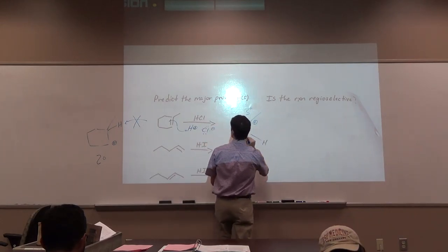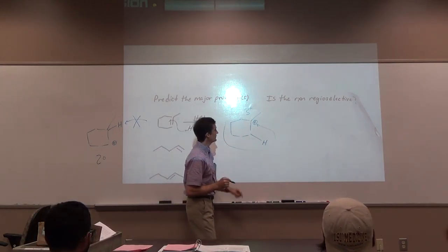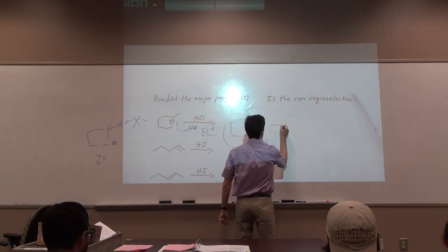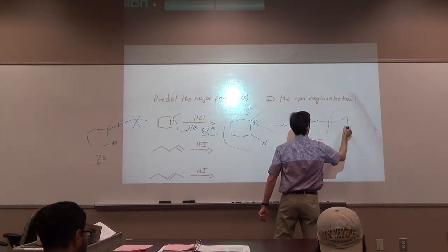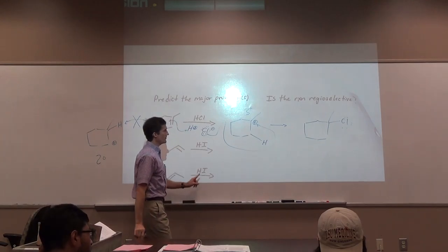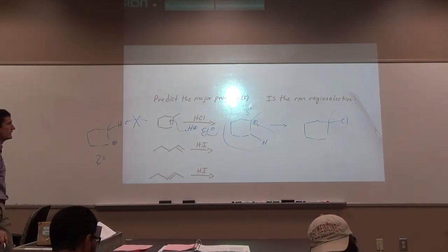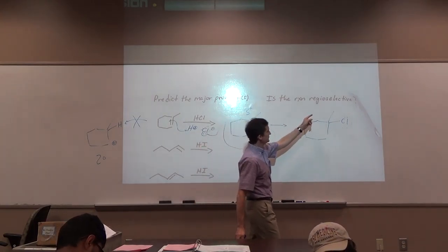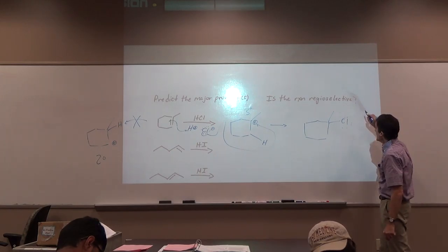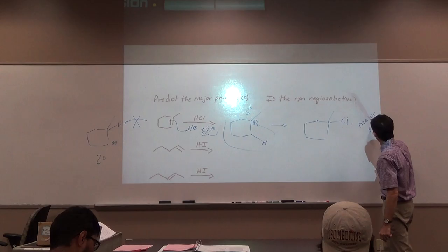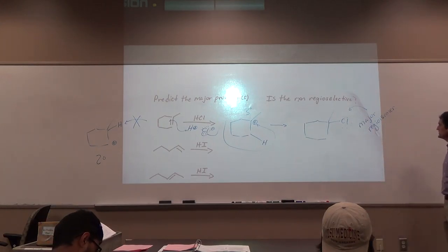What's the next step? The chlorine's electrons add to the carbocation, making a bond here to give our final product — three lone pairs on the chlorine because the other lone pair made a bond to the carbon. This reaction is regioselective.